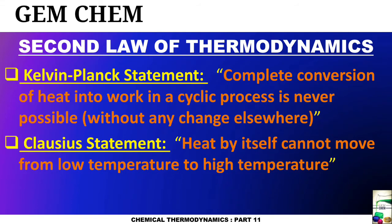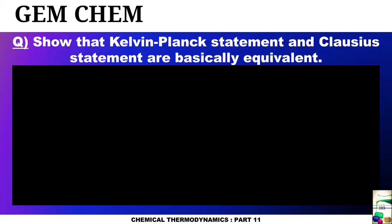These two statements are from different scientists but their equivalence is the same. To show this, first we consider that the Kelvin-Planck statement is justified whereas the Clausius statement is not. We do the calculations and find that the Kelvin-Planck statement is also not justified when the Clausius statement is not. In the second case, we take the Clausius statement to be justified whereas Kelvin-Planck is unjustified, then prove Clausius also becomes unjustified.